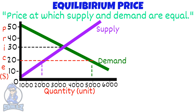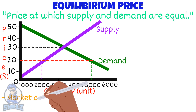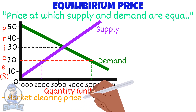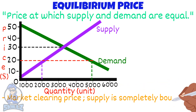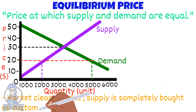At price 20, although the demand is at 5,000 units, sellers are willing to supply only 2,000 units, meaning there will be more demand than supply. We call the equilibrium price the market clearing price, since the supply is completely bought up and there are no buyers left with no goods.